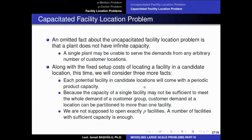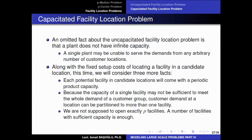Considering the capacity constraint, it may not be possible to assign the whole demand of a certain customer to the closest facility. Because of that, since it may not be possible to meet a customer's demand fully from a single facility, we may think about fractionizing the demand and assigning each fraction to a separate facility location. Our objective here is no longer to open exactly P facilities — we are removing the P-median constraint.